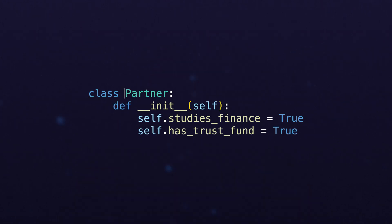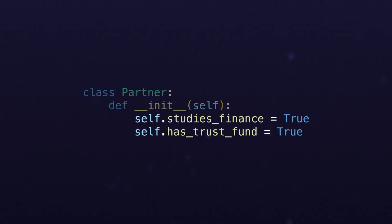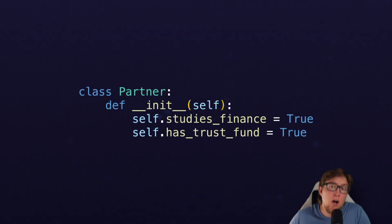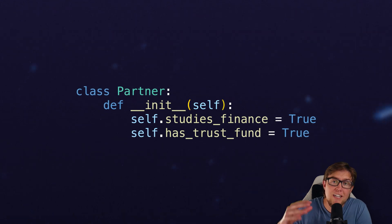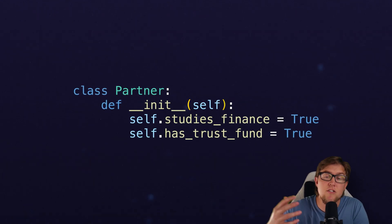But before we talk about enums, let's brush up on a little bit of category theory. And despite the word 'theory' being added to scare non-academics, it's really not too bad. In programming, types are how we categorize things. For example, this partner class contains two variables, both of which are Boolean types. So the partner type actually contains other types, and this is common when working with collection types like lists, tuples, and classes.